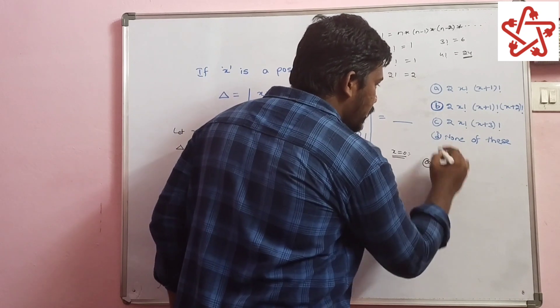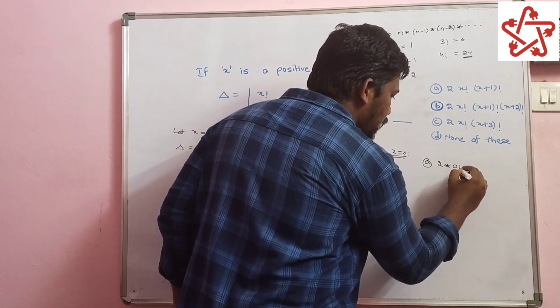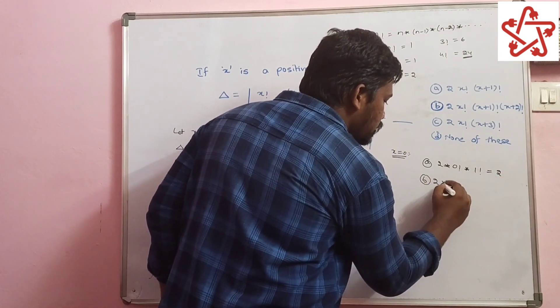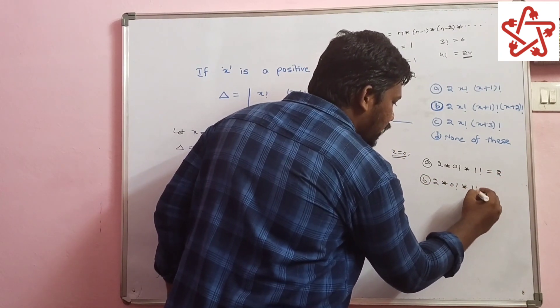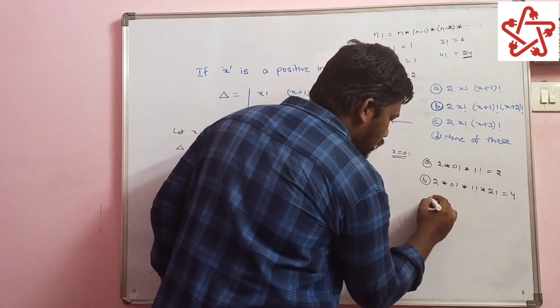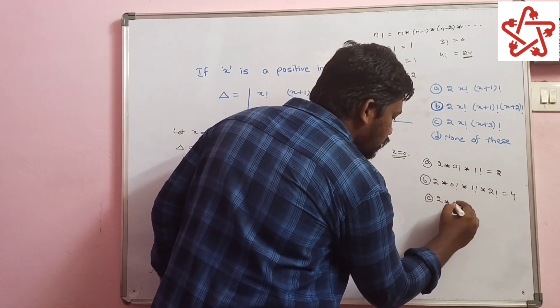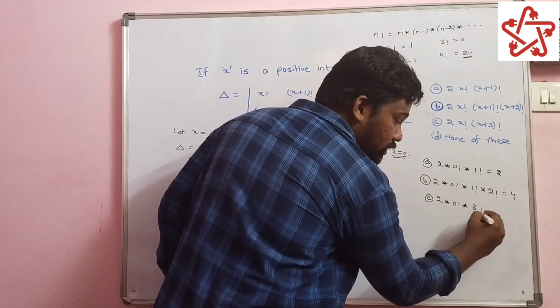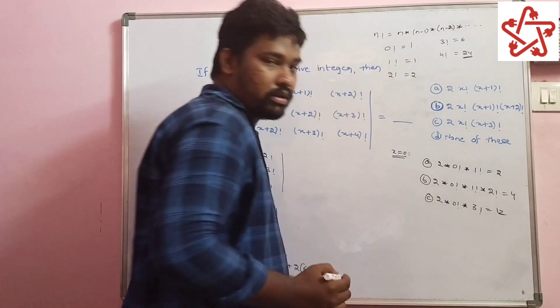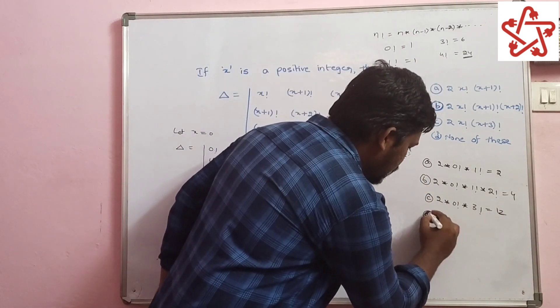For option A, we will be getting 2 into 0 factorial into 1 factorial, which is 2. Option B is 2 into 0 factorial into 1 factorial into 2 factorial, which is 4. Option C is 2 into 0 factorial into 3 factorial, which is 12, and option D is none.